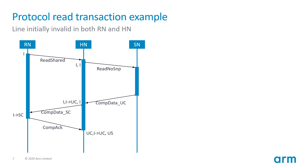Let's see a few examples of how our CHI-based protocol works. This first example shows the transaction flow for a load cache miss at a request node. Since there is no intent to modify the line, the requester issues a read shared request. At the home node, there is no valid copy of the line and no valid directory entry, so we fetch the line from memory by issuing a read no snoop to the slave node. The slave node replies with request completion data — in this case, the memory always replies with unique clean data, encoded in the response type. We cache the unique clean data at the home node and send the data to the requester as shared clean. When the requester receives the data, a completion acknowledgment is sent to the home node, which updates the directory state to reflect the shared state of the line.